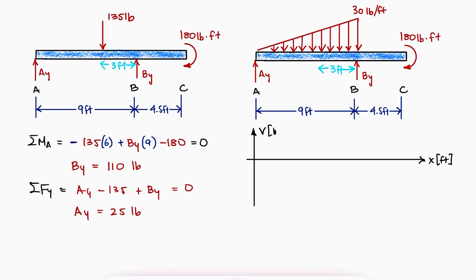The shear diagram with an X-axis in feet and a Y-axis in pounds would go up by 25 at A, begin with a slope of 0 and end with a slope of minus 30 at B, and go up by 110 at B.